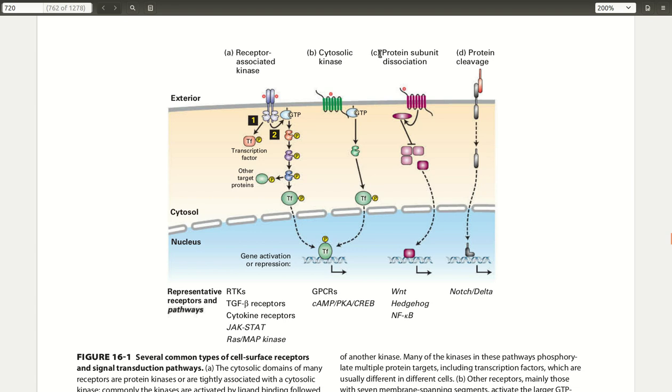There's also protein subunit dissociation, in which binding of the hormone to the receptor causes a dissociation of a multi-protein subunit in the cytosol and one of these subunits will become the transcription factor. And then there's also protein cleavage. This is where part of the receptor on the cytosolic part will be irreversibly cleaved upon binding of the hormone, and that cleaved segment will become the transcription factor.